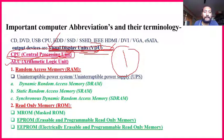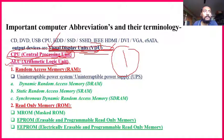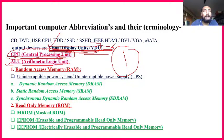ALU stands for Arithmetic Logical Unit. It calculates all kinds of values — mathematical values. For example, if I give it S² + V², that information goes to the ALU part, it calculates, and then displays the result on screen. That is called ALU — Arithmetic Logical Unit. Very, very important.